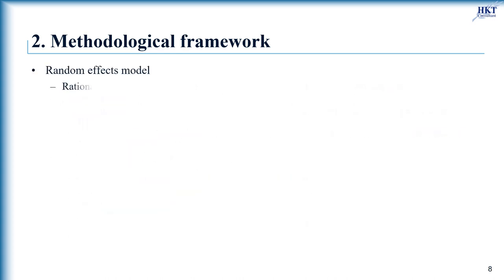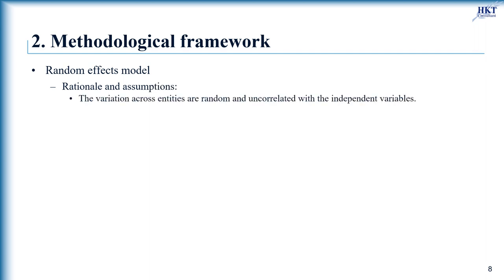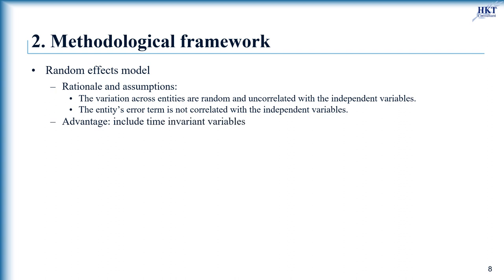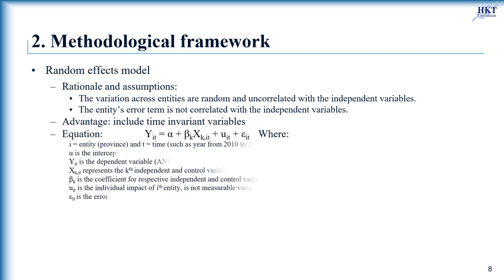In the random effects model, the variation across entities is assumed to be random and uncorrelated with the independent variables included in the model. Random effects assumes the entity's error term is not correlated with the independent variables, which allows time-invariant variables to play a role as independent variables. If we believe differences across entities influence our dependent variable, we should use random effects. An advantage is that we can include time-invariant variables such as the superficies of a province — in the fixed effects model, these are absorbed by the intercept. However, some variables may not be available, leading to omitted variable bias.